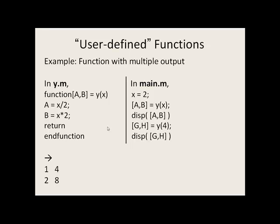Here's an example with multiple output. We have a program main that calls a function y two times. y has 1 input but 2 outputs. We say x is 2, so the value 2 will get passed to the function y. 2 divided by 2 is 1, and 2 times 2 is 4. That gets stored in a and b. The first item in the output list, a, which is 1, gets passed to the first item in the main program. So a in the main program gets the value 1. b has the value 4 — it's the second item in the list — so b gets 4. That's what gets printed on the screen.